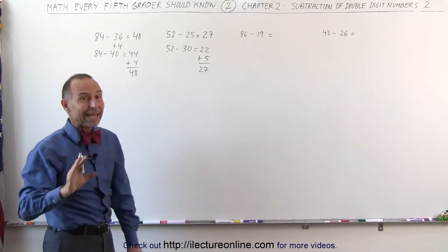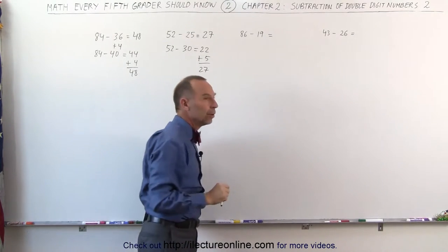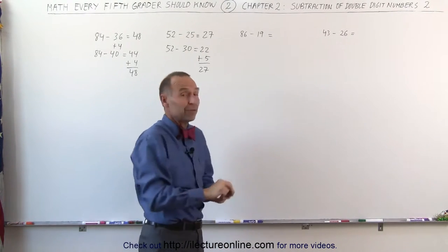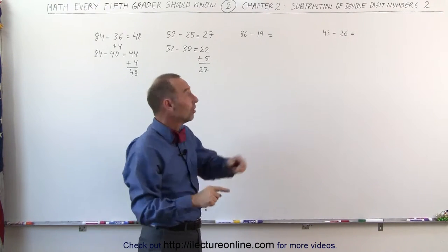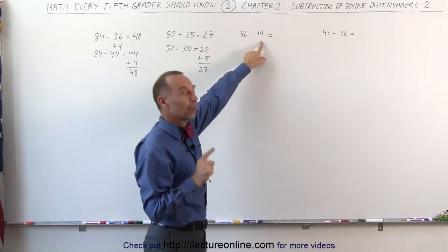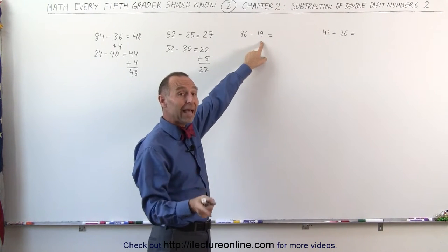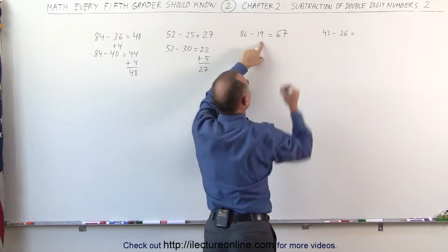Now, let's see if we can do that without writing anything down at all. 86 minus 19. What I'm going to do instead is subtract 20 from 86. 86 minus 20, 8 minus 2 is 6. So 86 minus 20 is 66. But remember, I subtracted one more, so I have to add one more to the 66. That gives me 67, and that is the answer.